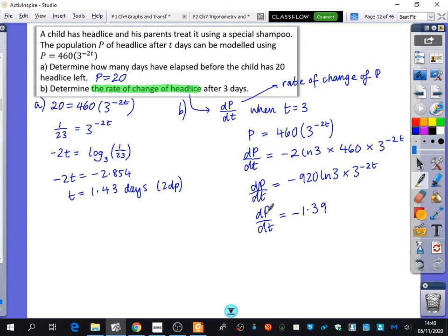So, I'm going to type this into my calculator. I'm going to do minus 920 multiplied by Ln3 multiplied by three to the power of minus six. And I get minus 1.39. Now, what do you think the units of this is? This is weird. It's the rate of change of head lice. Yeah, it's the change in lice per day. And that comes from P is for lice, for the population of the lice, and T is for the day.